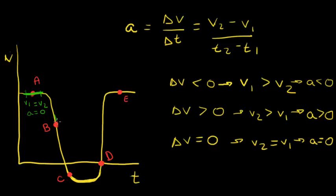At point B, if we draw a tangent line, our initial velocity is going to be greater than our final velocity. So our change in velocity is negative. Therefore, our acceleration is also going to be negative.